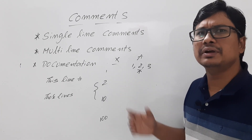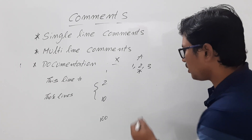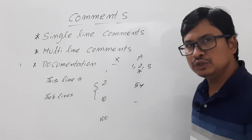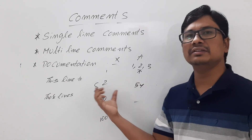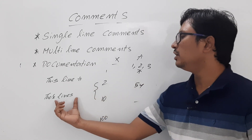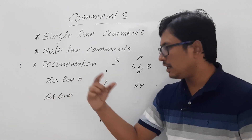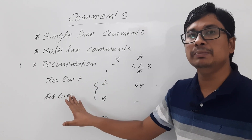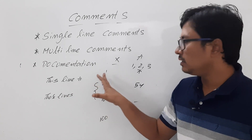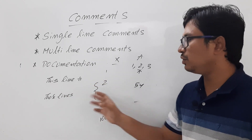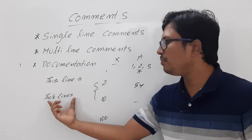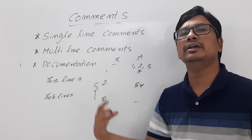Or let's say you have written some Java program five years before. Now if you read it, you should be able to understand why you wrote this program. All these things will be useful if you add comments. Remember, the comments will be ignored by the compiler. When you convert the Java file to the bytecode, the comments will be ignored by the compiler, so the comments will never be displayed in the output.